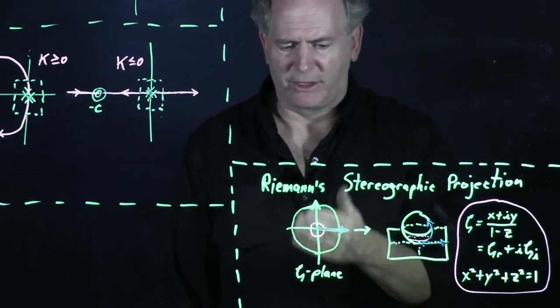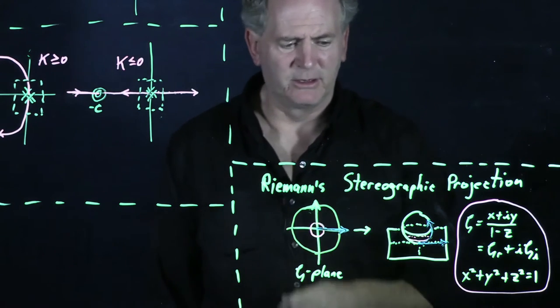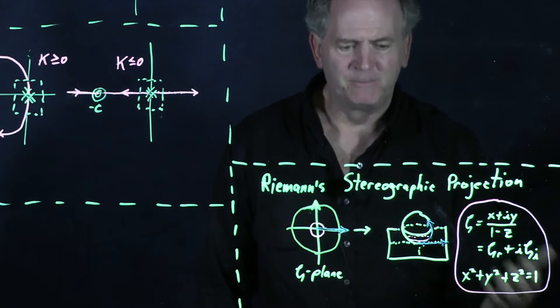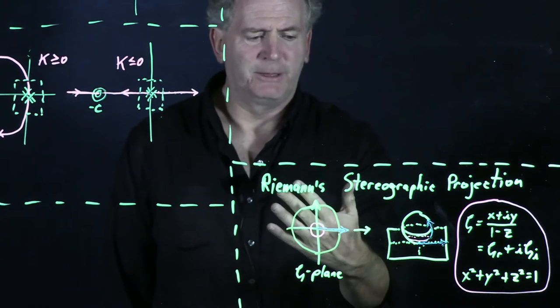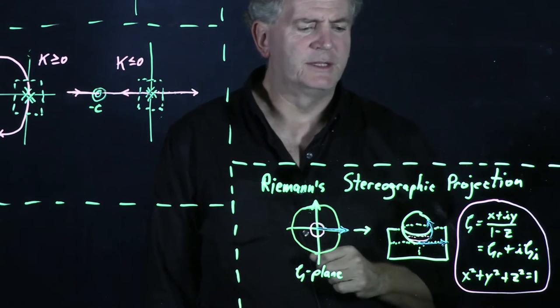And he proposed a projection which maps the complex plane onto the unit sphere. And so this projection maps the origin of the complex plane to the south pole and a circle around the origin to a circle near the south pole.